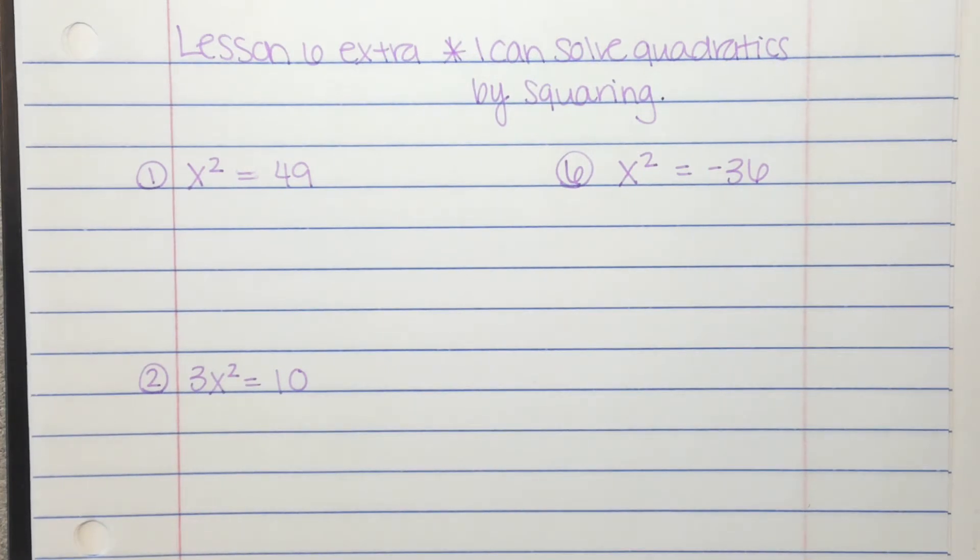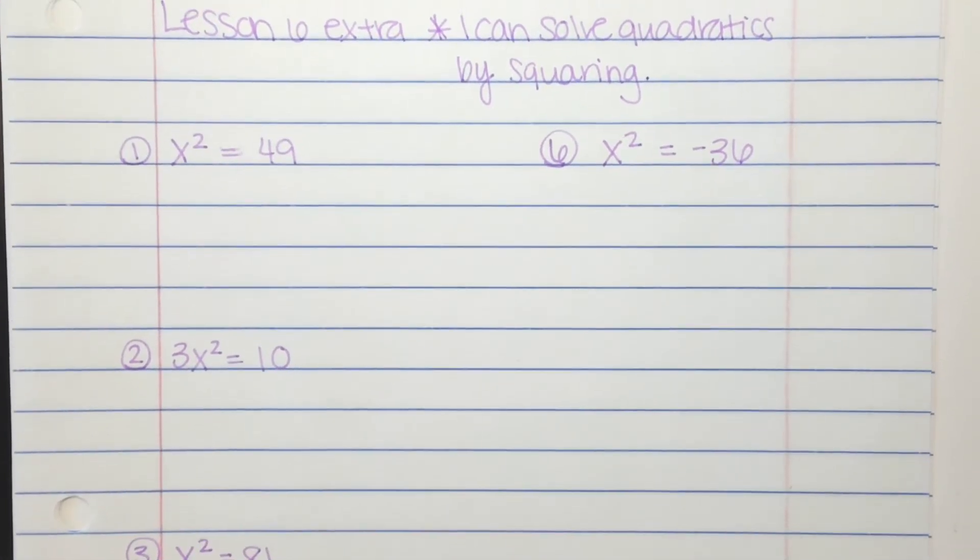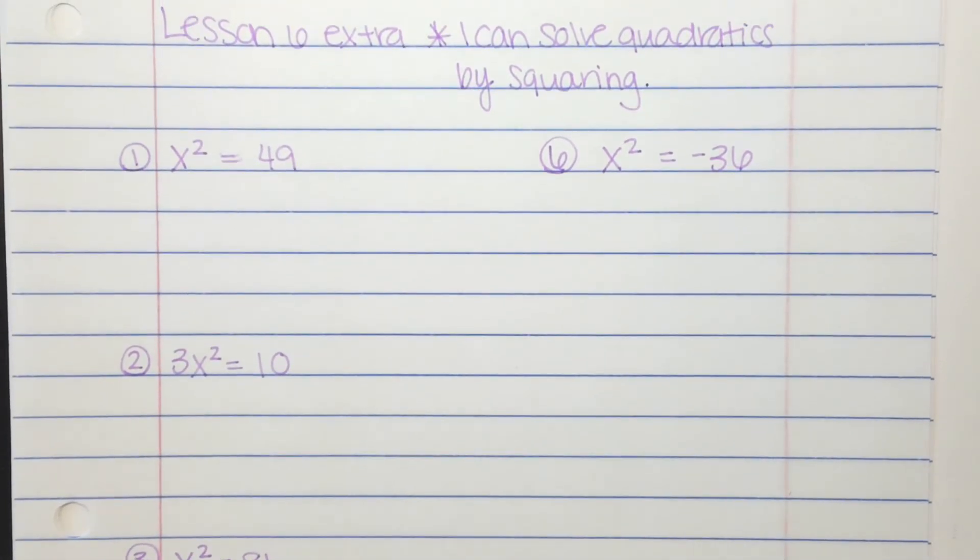We'll just do some quick examples, and then you will have some problems like this on your Math Excel work. So you do need to make sure you understand these problems. You can solve quadratics by squaring when you're only given the x squared or the variable squared term. There's no variable with just an x. So when you're given that, you can just square root both sides.